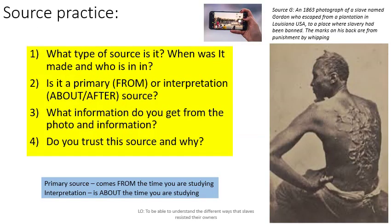As always, we finish with some source practice. This is an 1863 photograph of a slave named Gordon who escaped from a plantation in Louisiana, USA, to a place where slavery had been banned. The marks on his back are from punishment by whipping. Answer the four questions in the yellow box in full sentences, starting with: what type of source is it — is it writing, a painting, or a photograph?